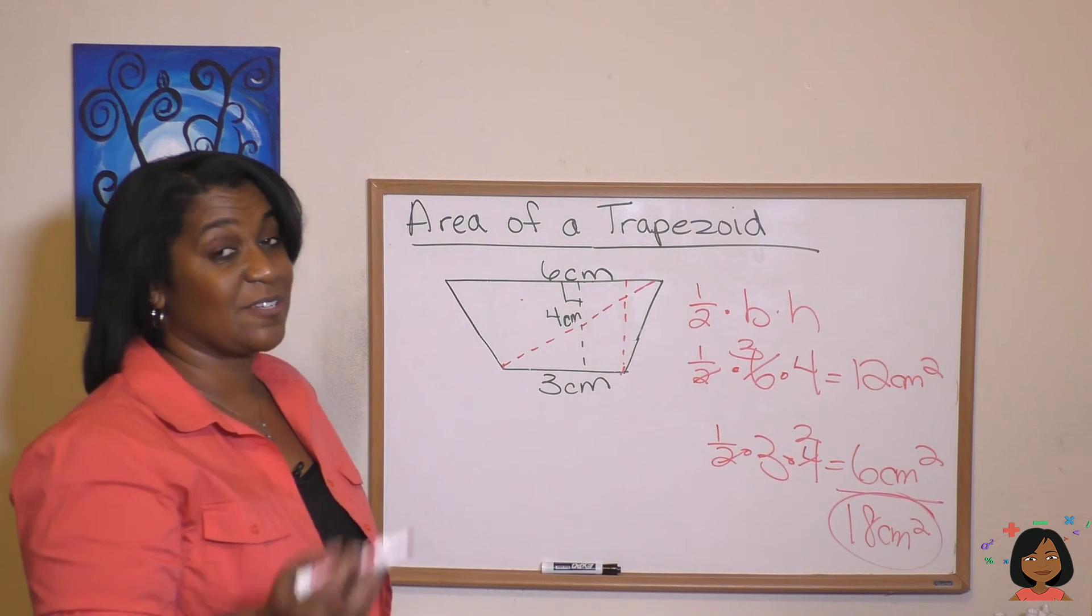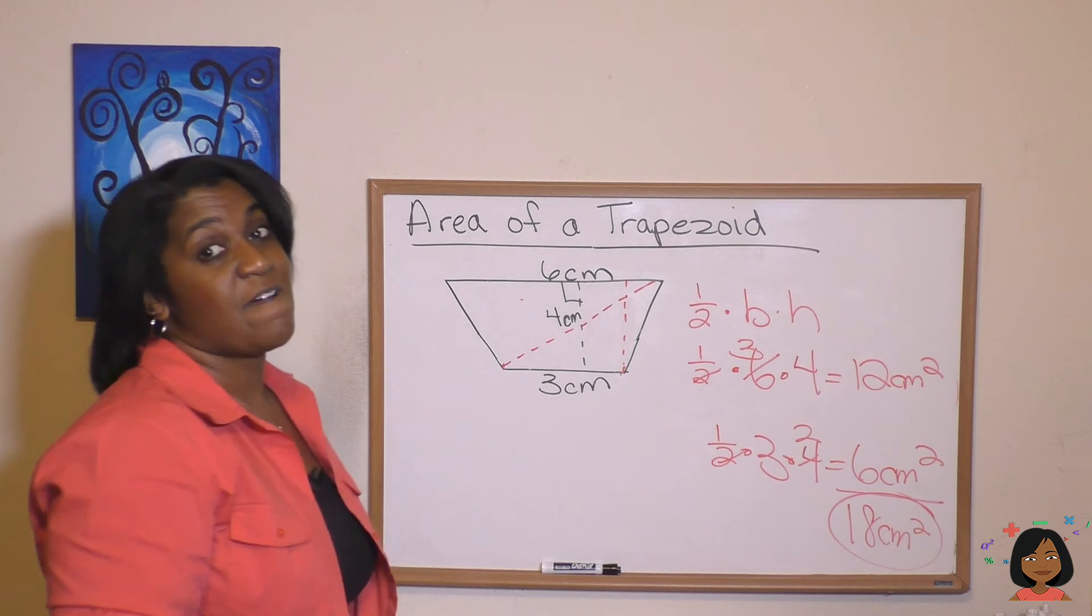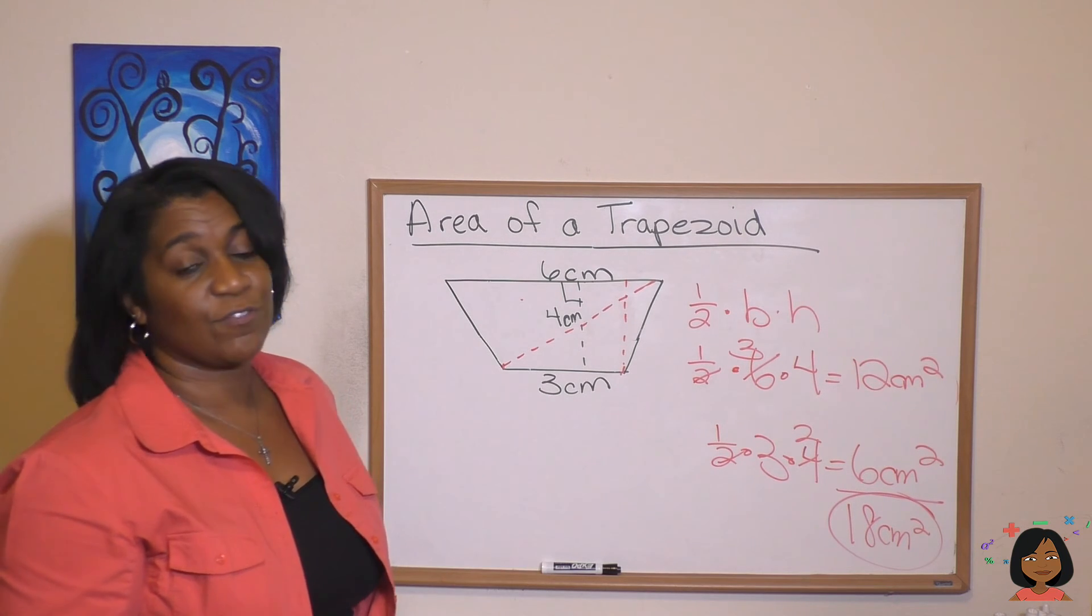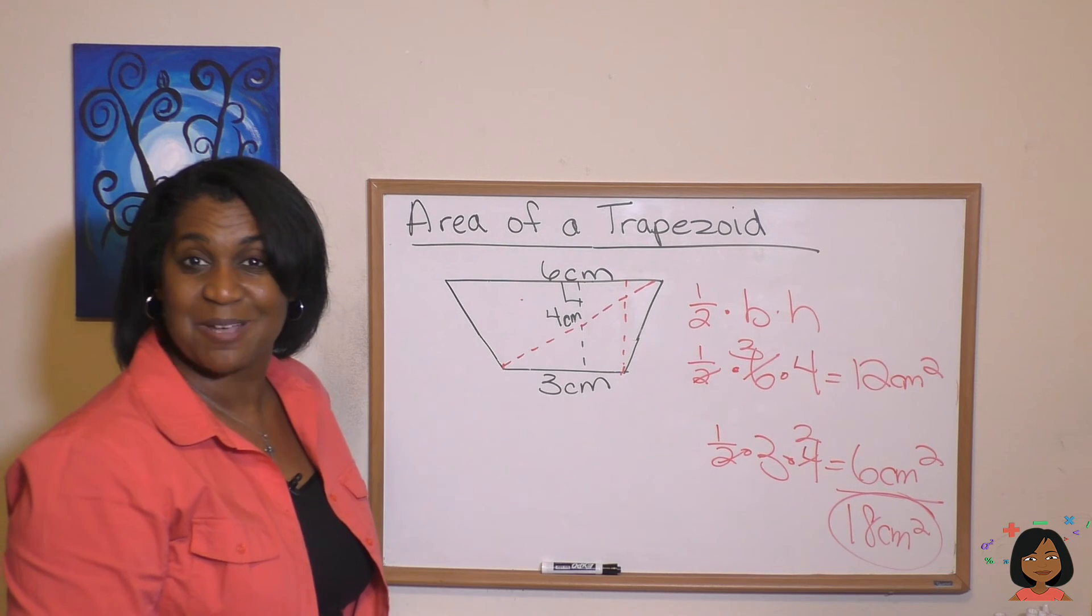That simple. If you can divide them into two triangles, find the area of one, find the area of the other. You've got different bases, but you have the same height each time. It's not bad, huh? Pretty simple.